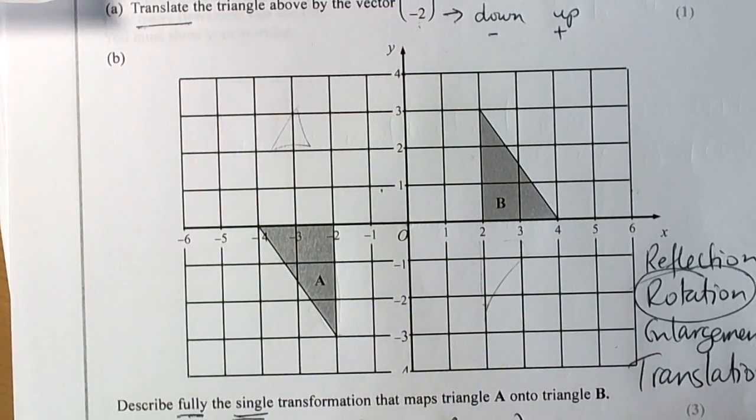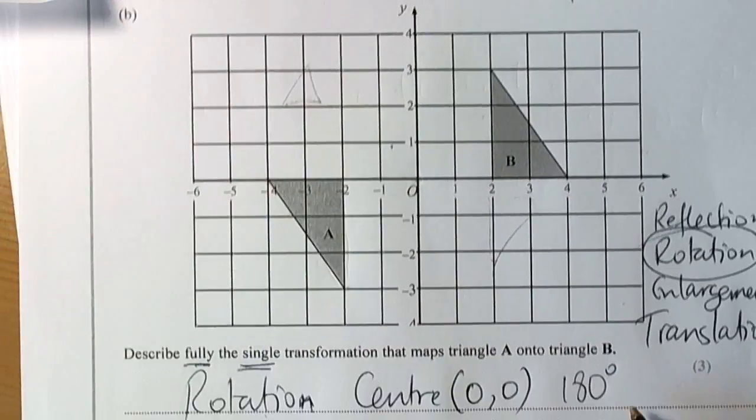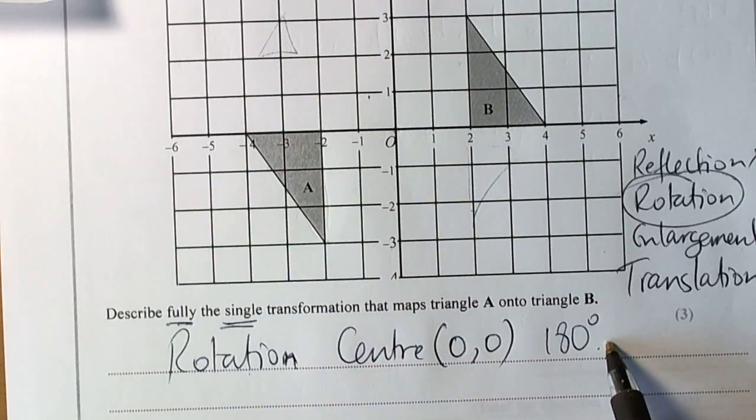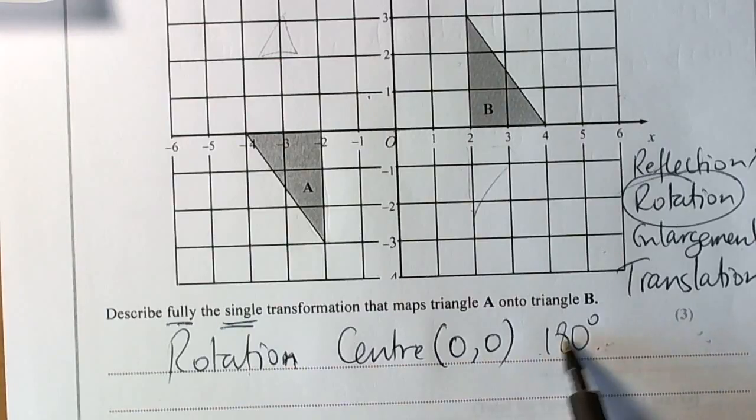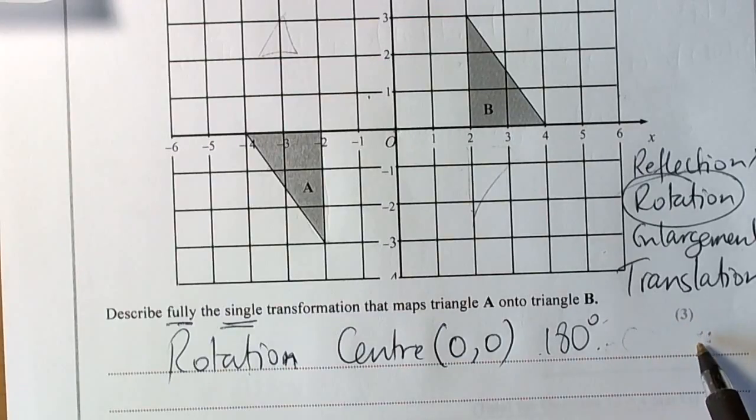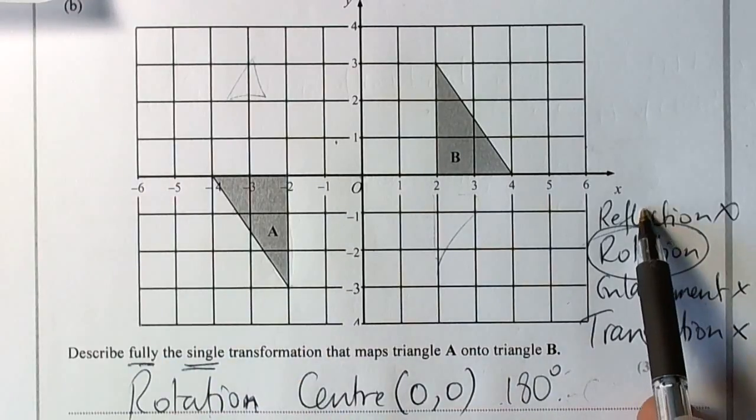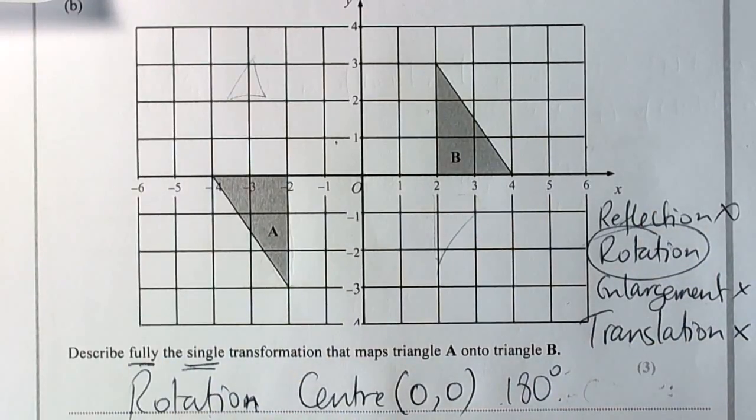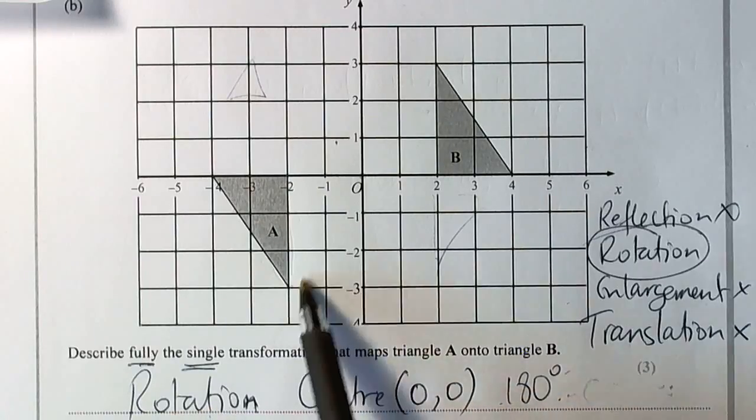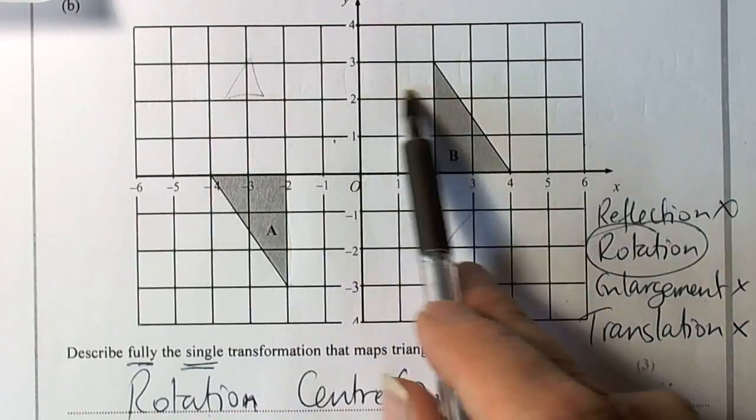So it's going to be center (0, 0), 180 degrees. Now, we should say the direction, so anti-clockwise or clockwise, but as it's 180, it didn't matter. So 180 degrees would be fine. But if you want to be complete, you could say clockwise or anti-clockwise. So just be careful where the question says, do a single transformation. You choose one of the transformation words only, and then you describe that rotation, in this case, through the center and the angle of turn.